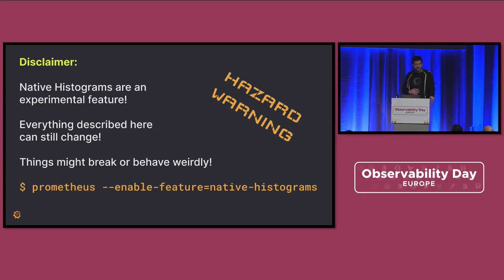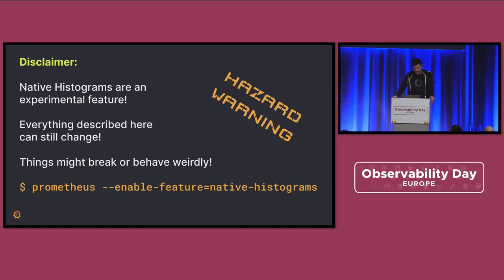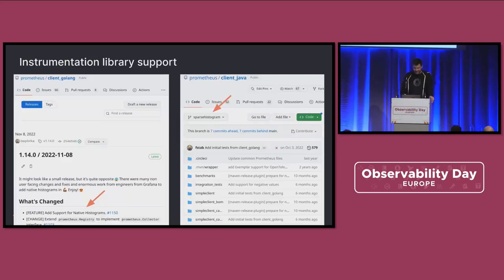Native histograms are still experimental. This is the first production pro tip: you need a feature flag to enable them. Everything could still break, but we are more and more confident that nothing will break. It's more and more stable, but there is no guarantee yet. Be prepared, although we get more and more confident.